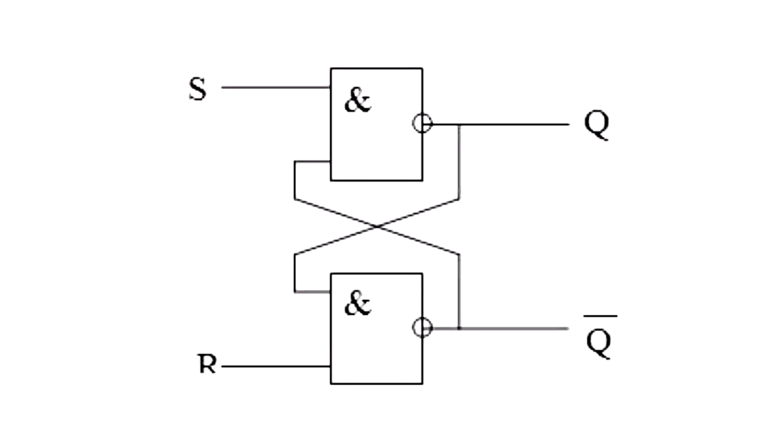The flip-flop has two inputs called S and R respectively. The S input stands for set, the R input stands for reset. The two flip-flop outputs are shown as Q and Q with a line. The letter Q with a line on top reads non-Q.